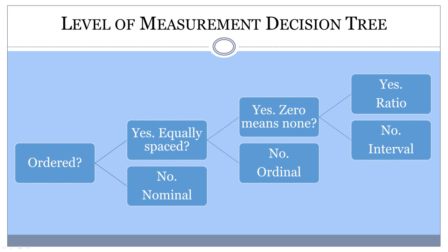If values are equally spaced, ask yourself if a value of zero actually means that the variable being measured does not exist. If not, the variable is interval. If the zero means none, the variable is ratio because the zero is absolute.